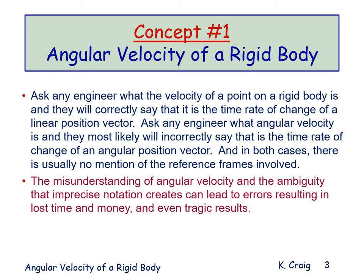The first mechatronic essential concept is angular velocity of a rigid body. Ask any engineer what the velocity of a point on a rigid body is, and they will correctly say it is the time rate of change of a linear position vector. In both cases, there is usually no mention of the reference frames involved. The misunderstanding of angular velocity and the ambiguity that imprecise notation creates can lead to errors resulting in lost time and money, and even tragic results.